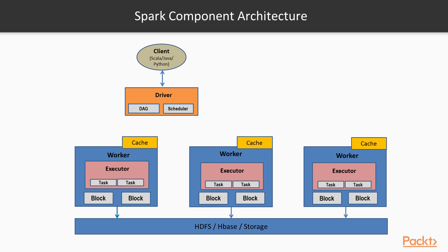Spark Executors are the host processes on which tasks from the Spark DAG are run. Executors reserve CPU and memory resources on slave nodes or workers in the Spark cluster, and can also cache data in memory or on disk. Executors are dedicated to a specific Spark Application and are terminated when the application is complete.